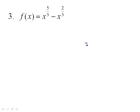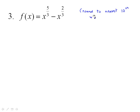f of x is equal to x to the 5 thirds minus x to the 2 thirds. I'm going to take this one to make our life a little bit easier. This is a common sort of instruction: round to the nearest tenth where appropriate. So if we get some really hard-to-work-with numbers, I'm going to round them off.